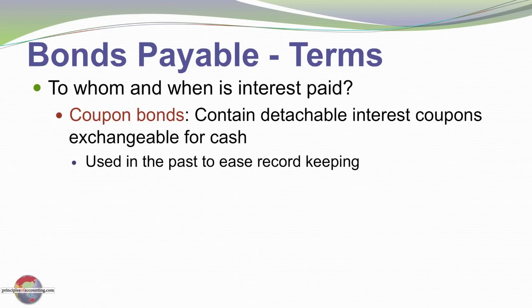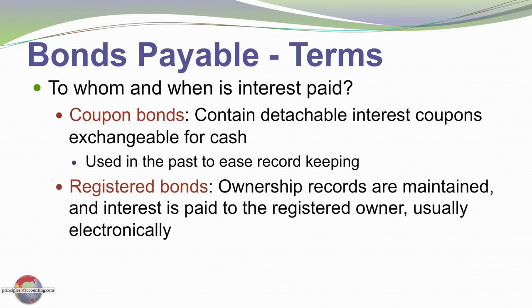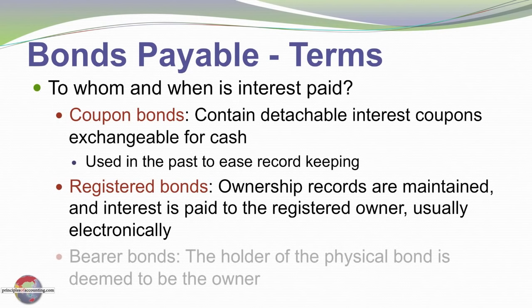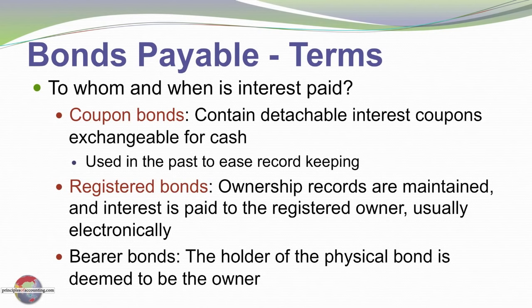To whom and when is interest paid? Once upon a time — not so much now — there were coupon bonds with detachable coupons that could be separated from the bond and periodically remitted to a paying agent such as a bank, where they would be exchanged for cash payments. The company would then fund the coupons by reimbursing the bank. Now, most bonds are registered bonds — ownership is linked to specific individuals and may only exist in electronic form. Ownership records are maintained and interest is distributed by check or electronic funds transfer. A bearer bond is one where ownership belongs to whoever physically holds the bond, but that is no longer common.